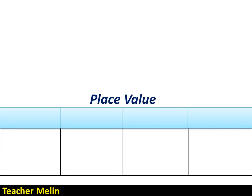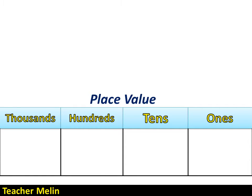These are the place values. The first place value is ones. The second place value is tens. The third place value is hundreds. And the fourth place value is thousands.